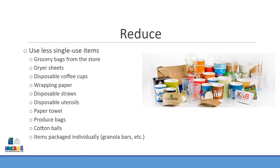Our next R word is reduce. Maybe refusing isn't quite right for you right now — that's okay. The best way to manage waste is to not make as much of it in the first place. Common single-use items we could use less of include grocery bags, dryer sheets, disposable coffee cups, wrapping paper, disposable straws, paper towels, produce bags, cotton balls, and individually packaged items.